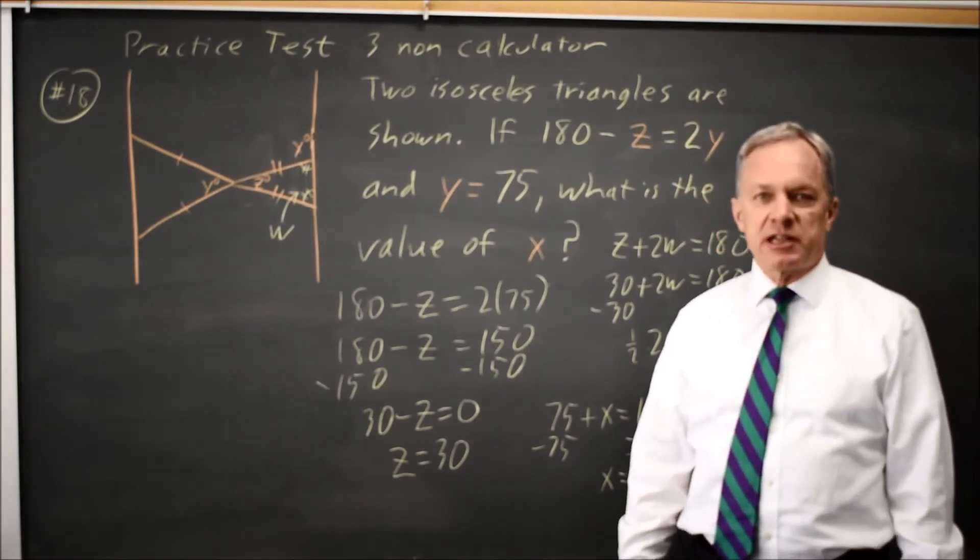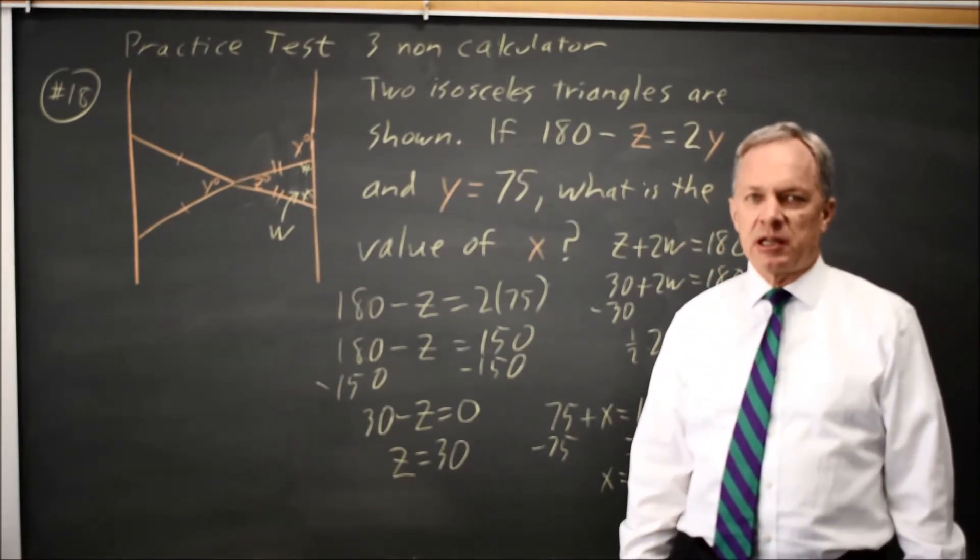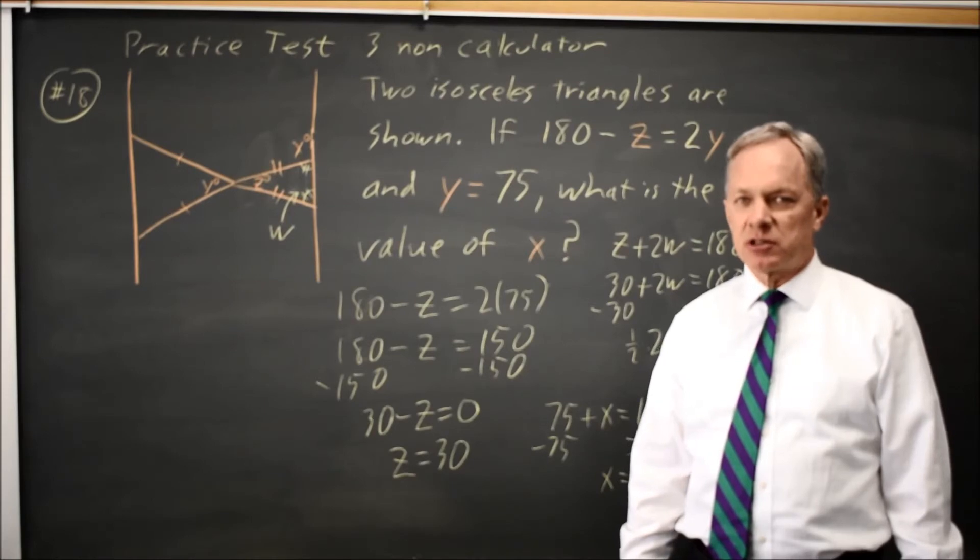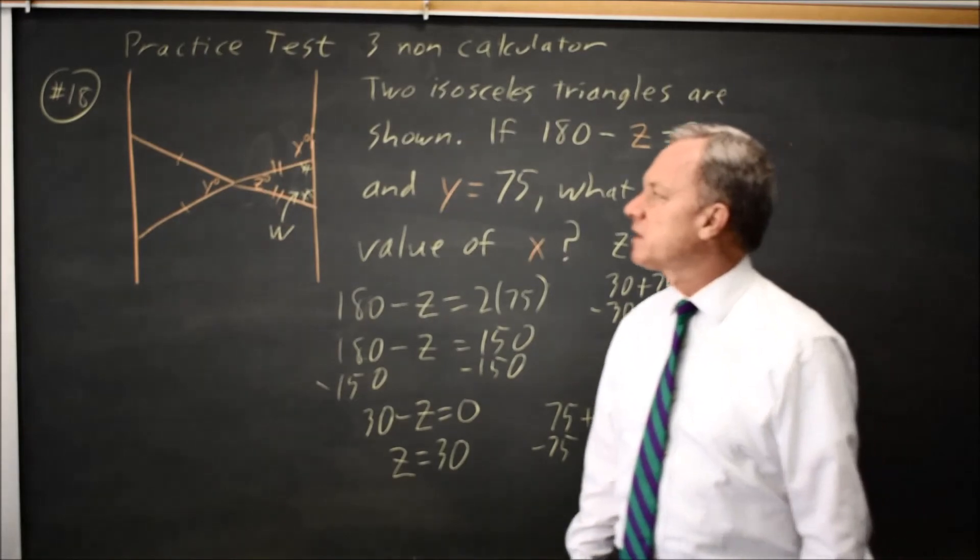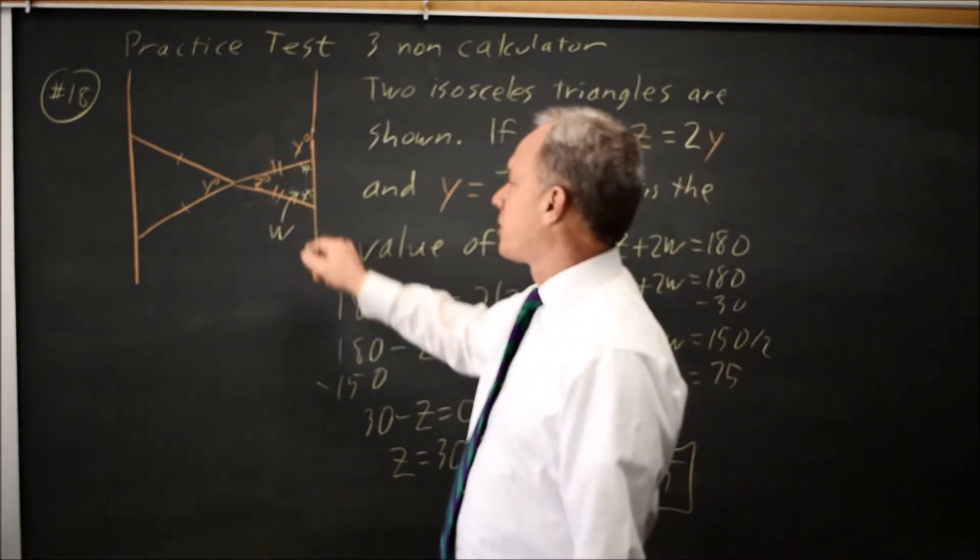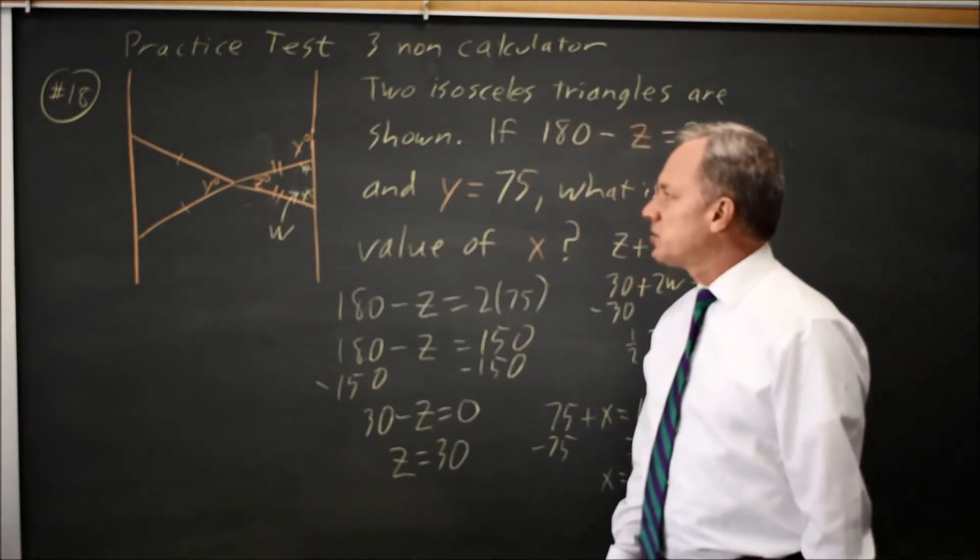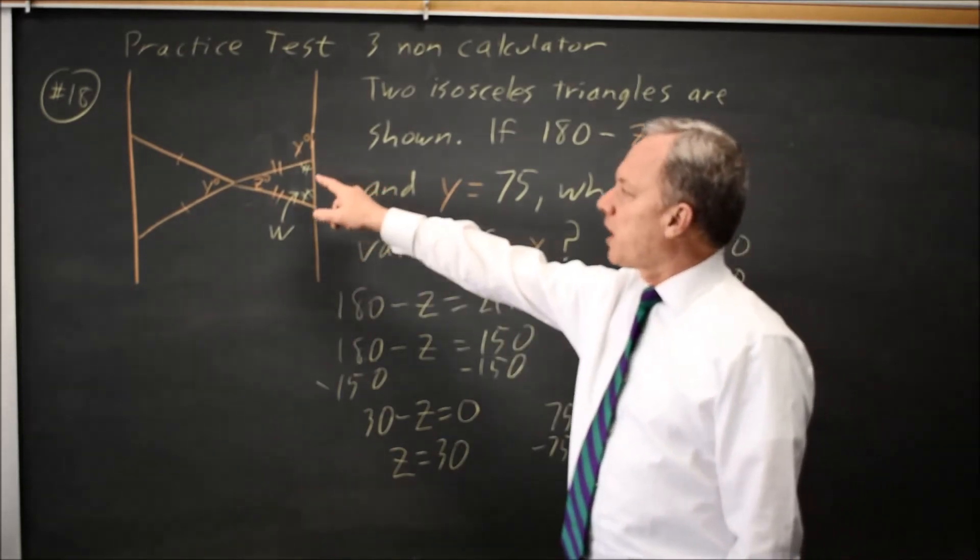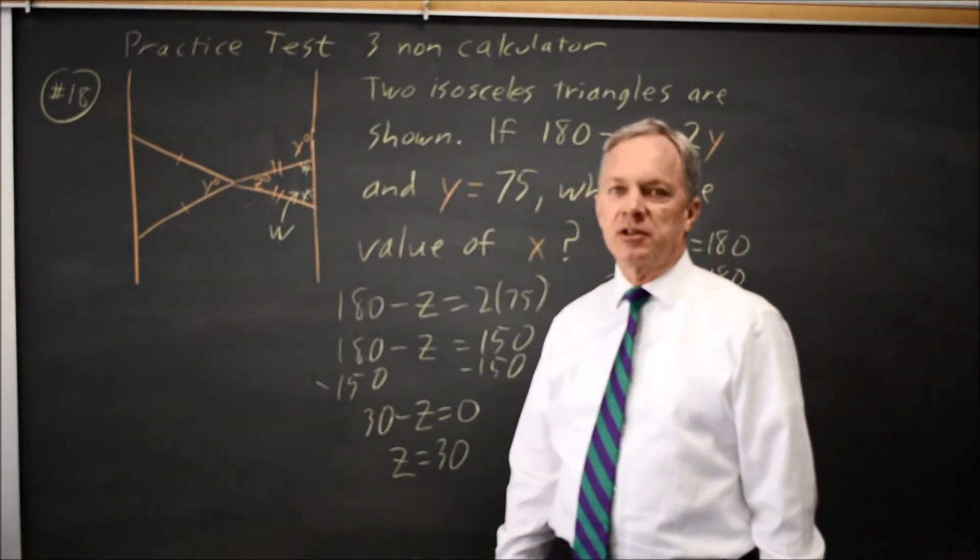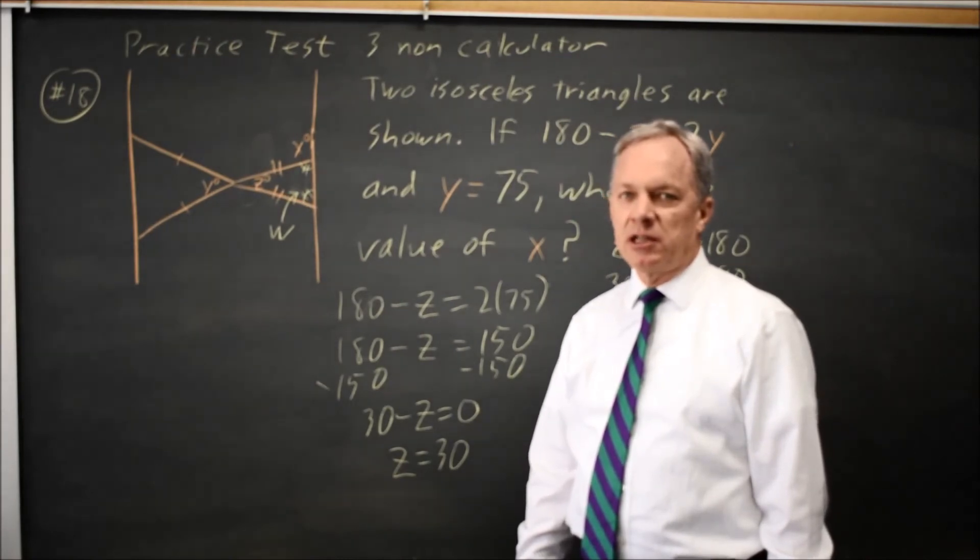College Board almost always asks about triangles, and they will often ask either similar triangles or isosceles triangles, or both at some point in the test. In this case, we're using the fact that if two sides are equal, the opposite angles are also equal. We're also using the fact that a triangle has angles adding up to 180, and that supplementary angles, or angles that add up to a straight angle, add up to 180.